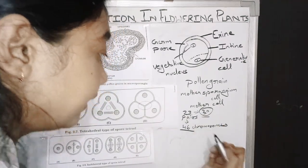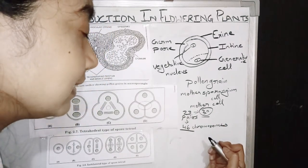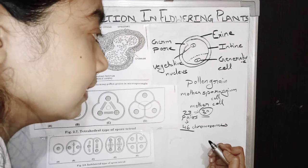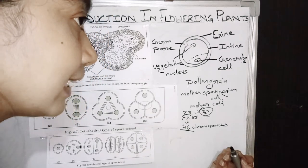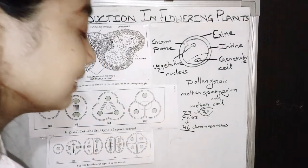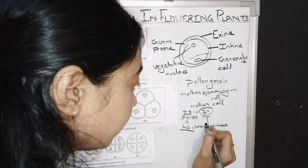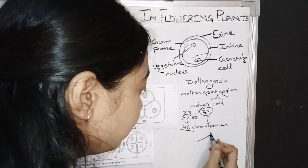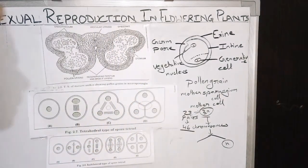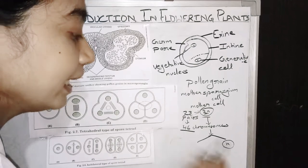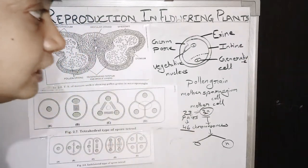This mother cell undergoes reductional division, as it takes place in oogenesis and spermatogenesis — I have explained that process. If you didn't watch the previous lecture video, please do watch the previous lectures. So it undergoes division and forms cells which undergo reductional division. Reductional means chromosome number is going to be half.